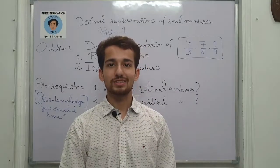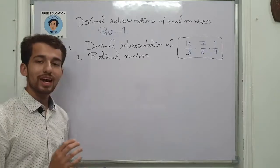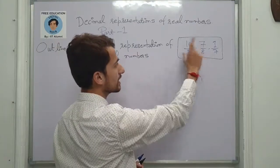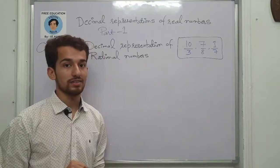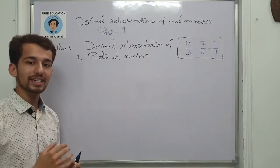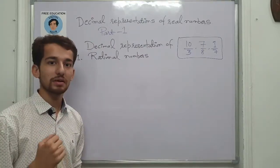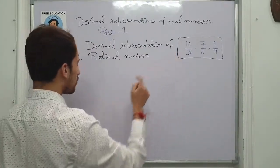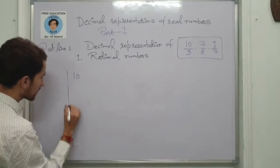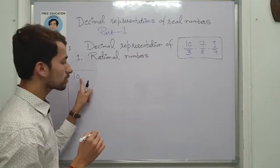Let's start the lecture. I have some rational numbers: 10 by 3, 7 by 8, and 1 by 7. These three are very important for understanding the concept. I'll divide each of the numbers by their denominators and find their decimal representations. Let's focus on the first one, 10 by 3, so I have to divide — 10 is the dividend.